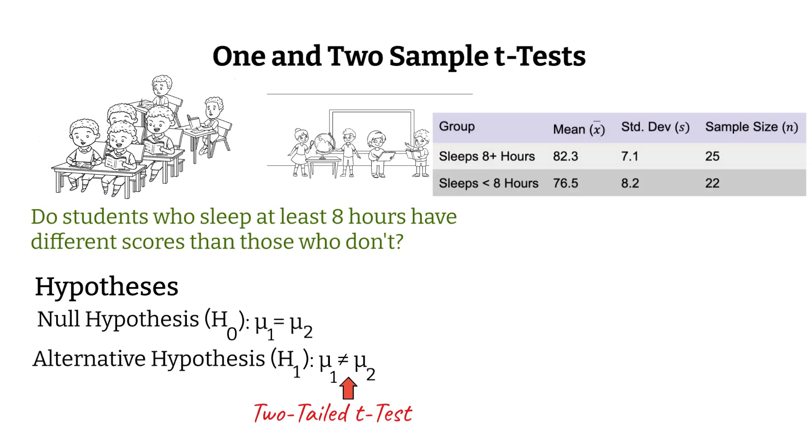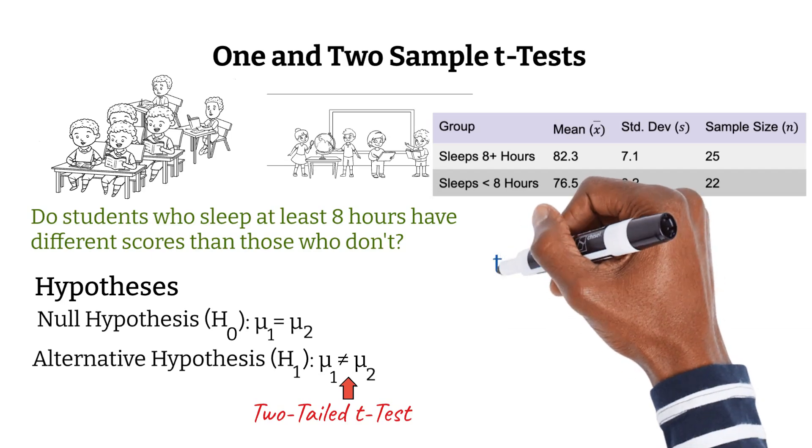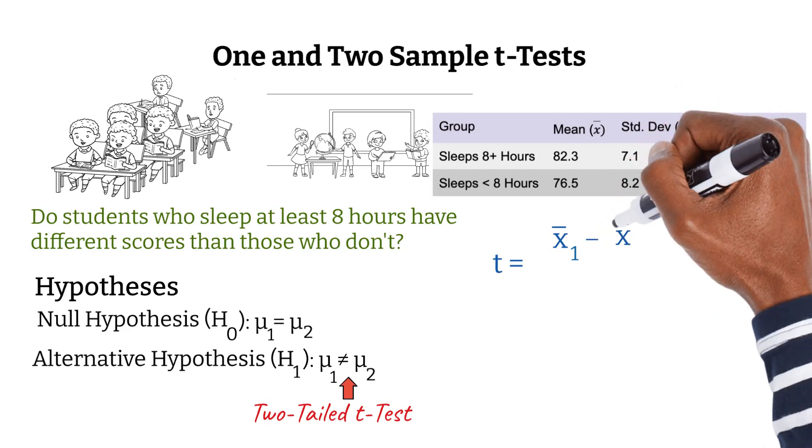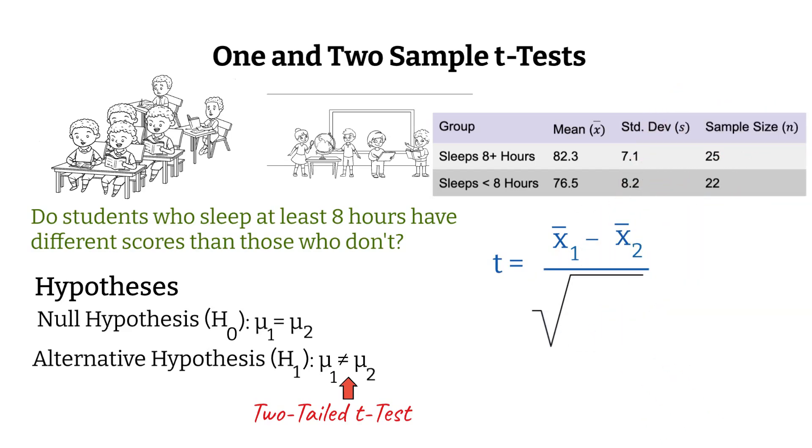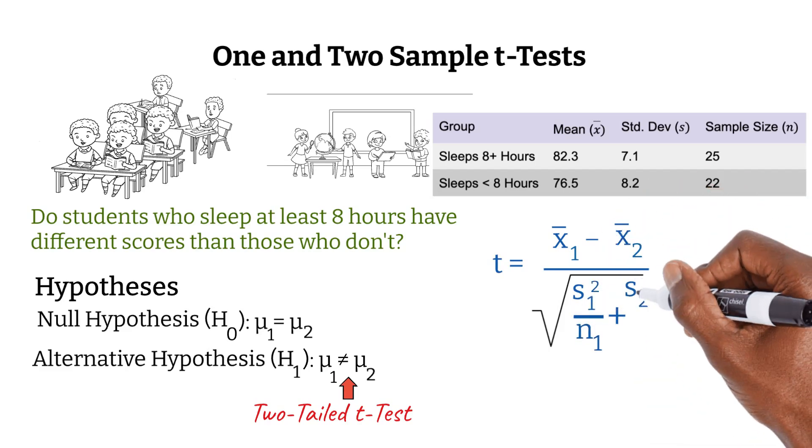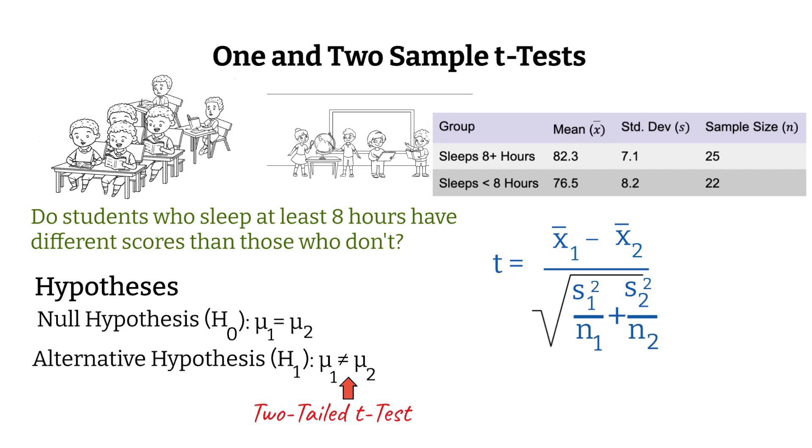Here is our data. For two sample t-tests, we use this formula to find t. t equals x sub 1 bar minus x sub 2 bar over the square root of s1 squared over n1 plus s2 squared over n2. x sub 1 bar is the mean of the first sample, while x sub 2 bar is the mean of the second sample. s1 is the standard deviation of the first sample, while s2 is the standard deviation of the second sample. n1 is the sample size for the first sample, and n2 is the sample size for the second sample. Once we plug all those values in, we get that t is equal to 2.58.